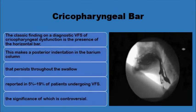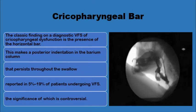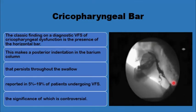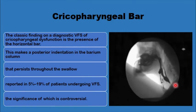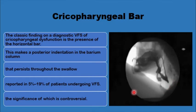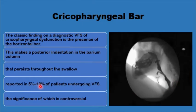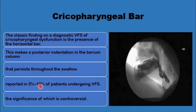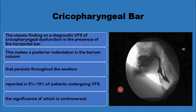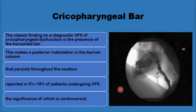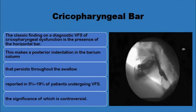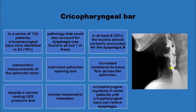Video fluoroscopy may also show a cricopharyngeal bar — a radiological sign of a prominence in the cricopharyngeus area. This is a fairly common finding, present in approximately 5% to 19% of video fluoroscopies, around 10% on average. It may represent an early stage of cricopharyngeal dysfunction, but is also commonly associated with other causes of pharyngeal dysphagia. Several studies have demonstrated that the cricopharyngeal bar is a common radiological finding in barium swallows and video fluoroscopies.